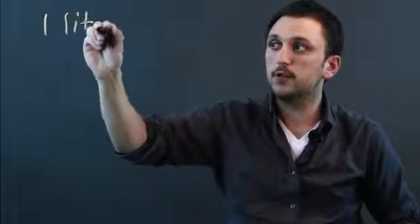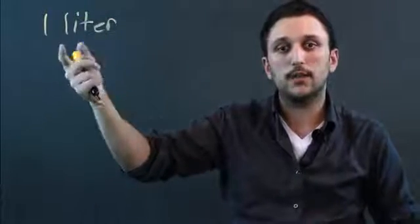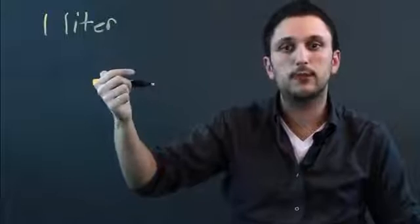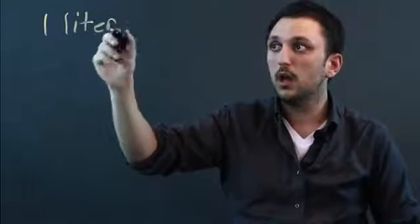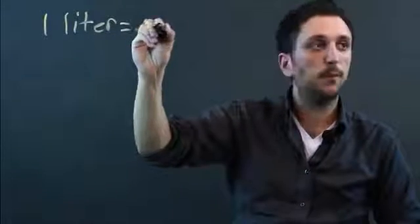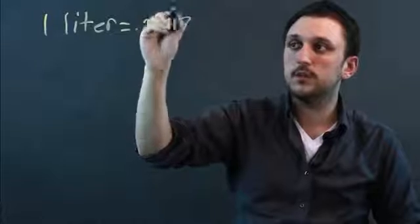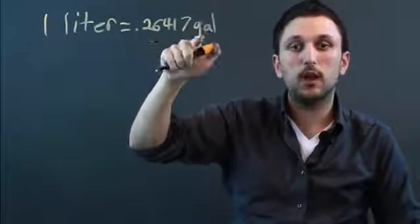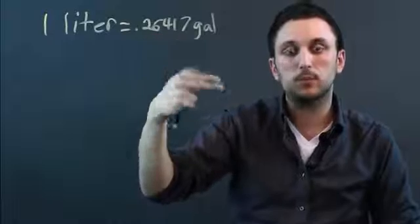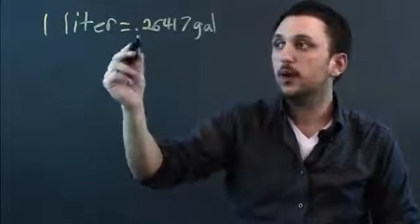So first, one liter, which is the measurement of volume in the SI or International System of Measurements or the metric system, equals .26417 gallons, which is the measurement of volume in the imperial system or the American system.